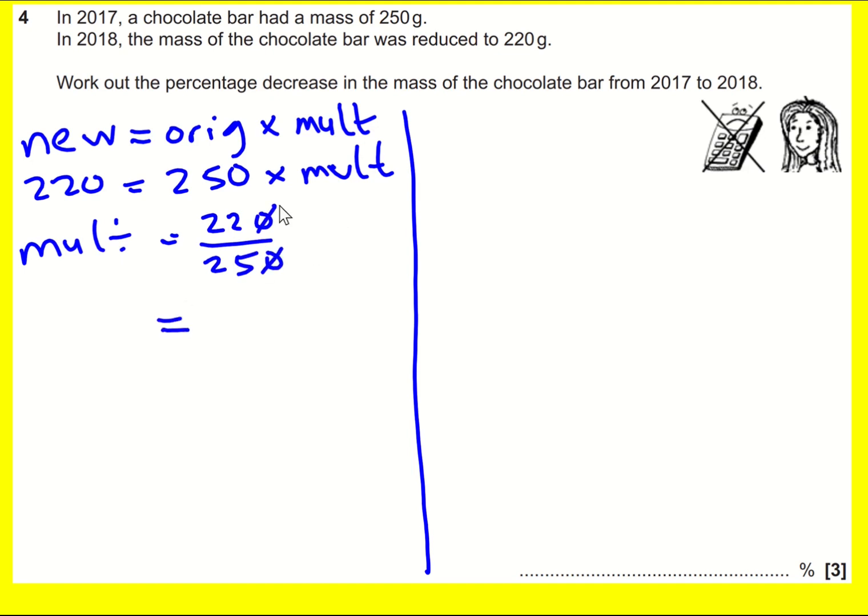I can simplify by timing top and bottom by 4 to get the denominator as 100. That gives me 88 over 100, which is 0.88. That means I've multiplied by 88%.